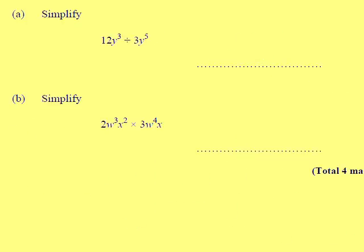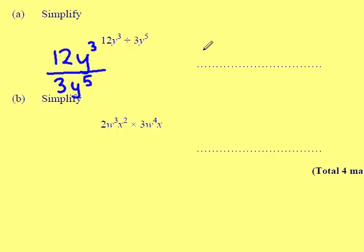Next question, number 9. Simplify 12Y cubed all divided by 3Y to the power of 5. Write it as a fraction: 12Y cubed all divided by 3Y to the power of 5. Divide 12 by 3 — you get 4. Take away the powers when dividing: 3 take away 5 will leave you with minus 2.